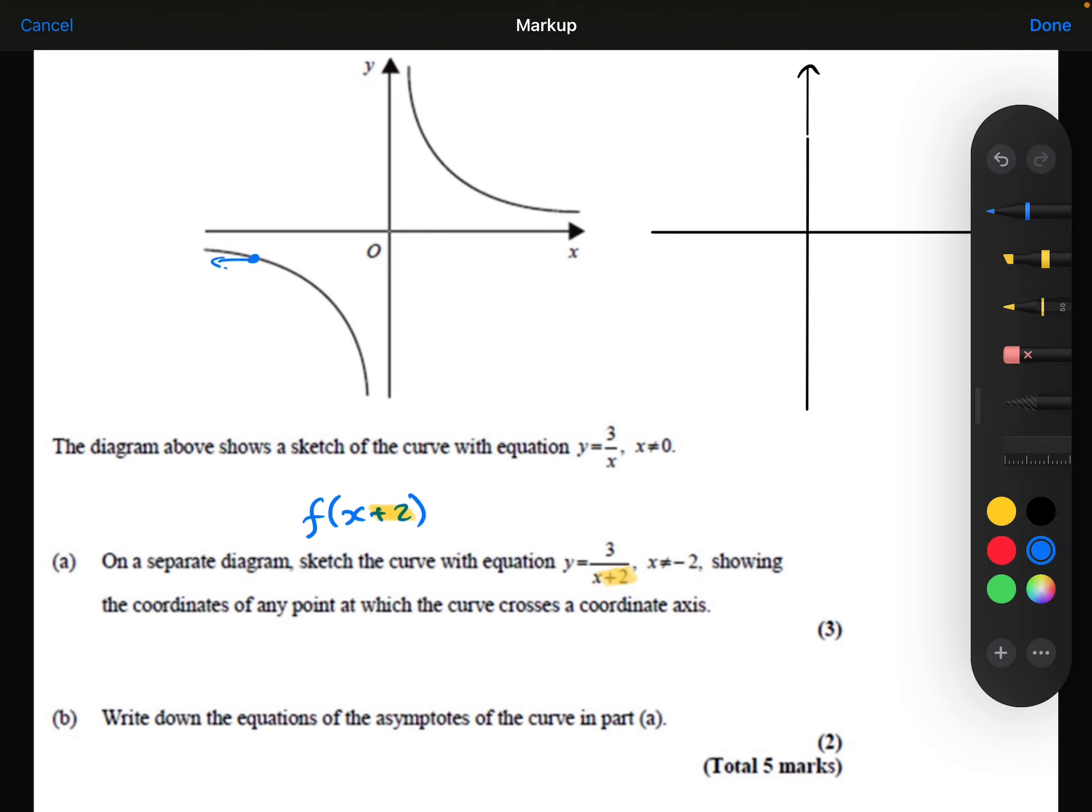So it's going to make the whole graph shift or translate 2 squares in the negative x direction.